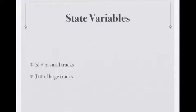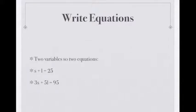First, state the variables. Number of small trucks is S. Number of large trucks is L. Write the equations. There are two variables so there are two equations. The first one is S plus L equals 25 and the next one is 3S plus 5L equals 95.